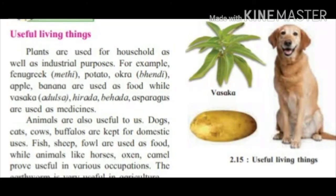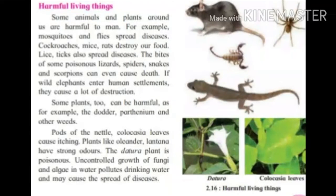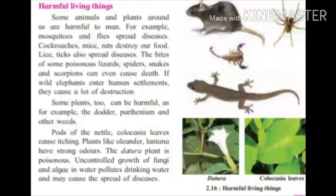Animals like horses, oxen, and camels prove useful in various occupations. Some animals around us are harmful to humans — mosquitoes and flies spread disease, cockroaches and rats destroy our food, and lice and ticks also spread disease. The bites of some poisonous lizards, spiders, snakes, and scorpions can even cause death. Wild elephants entering human settlements can cause a lot of destruction.